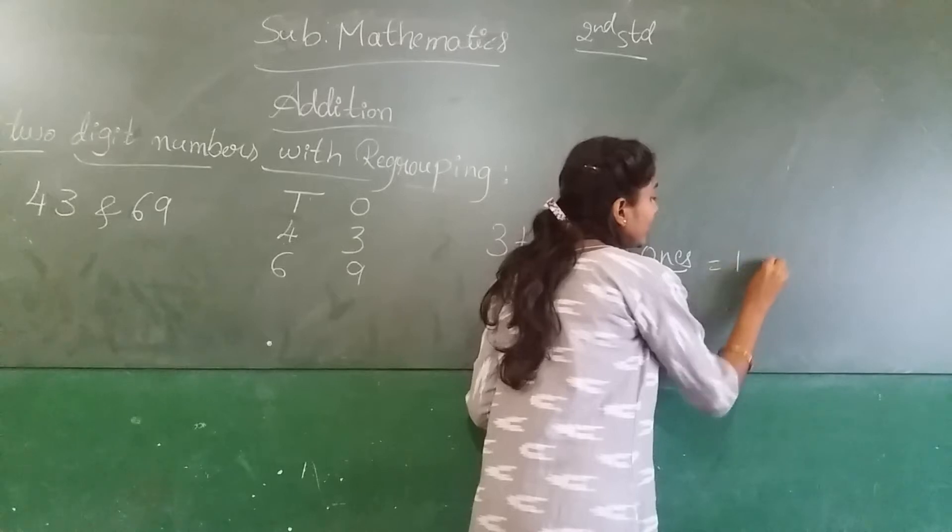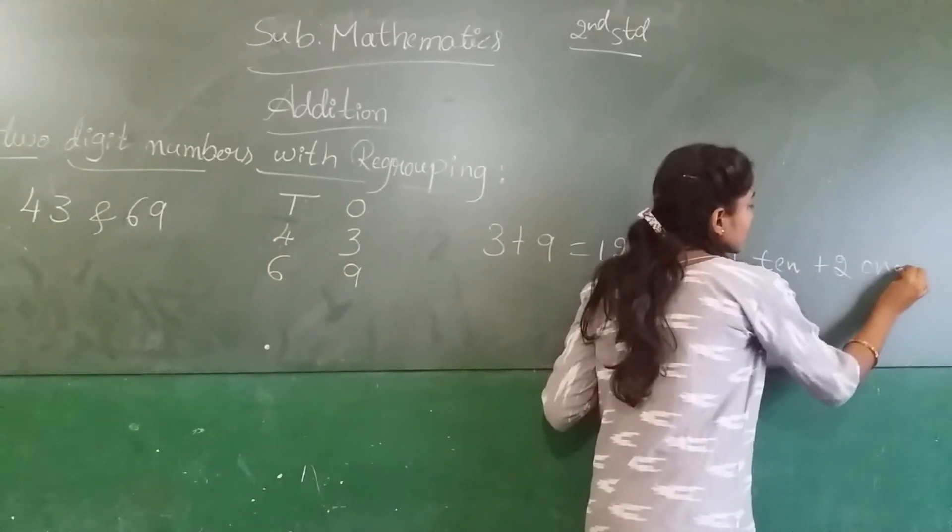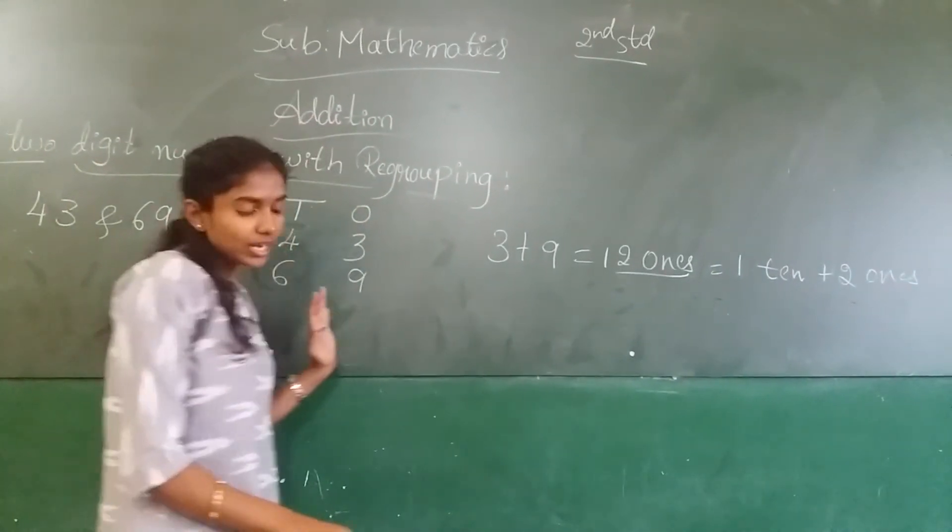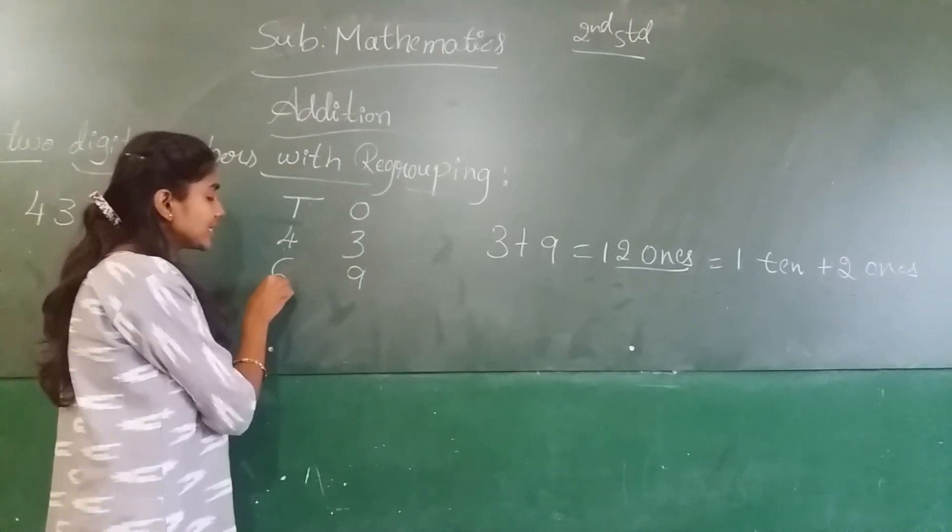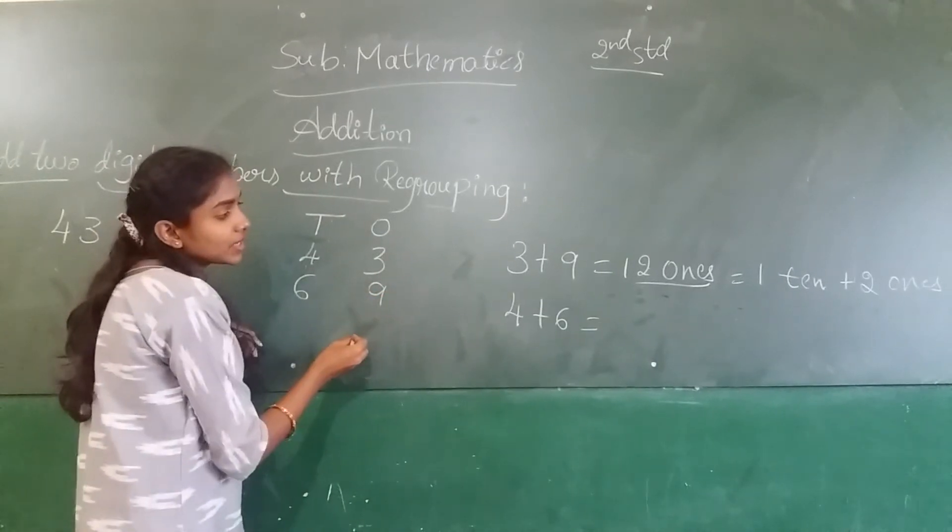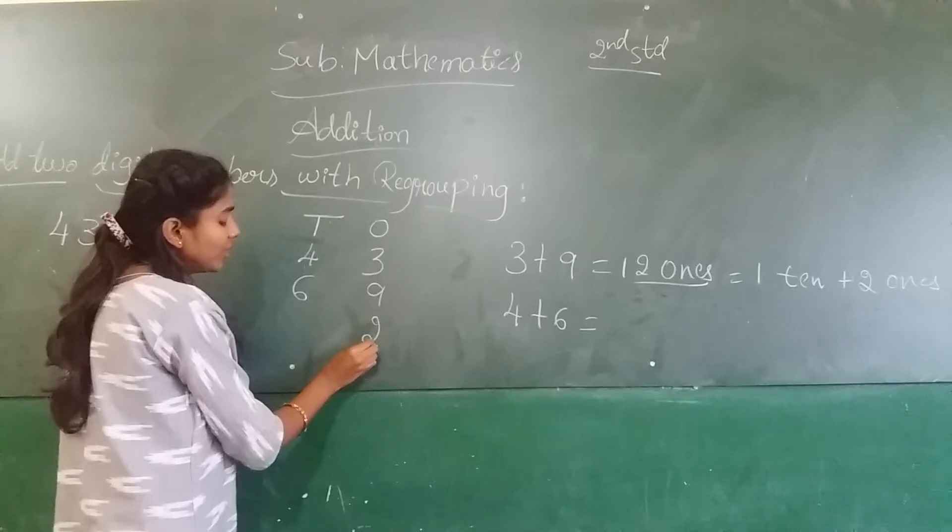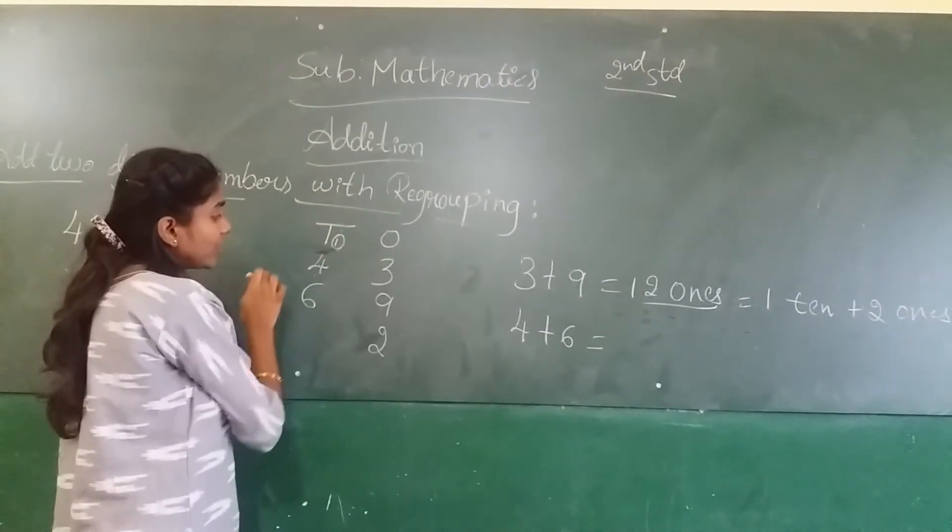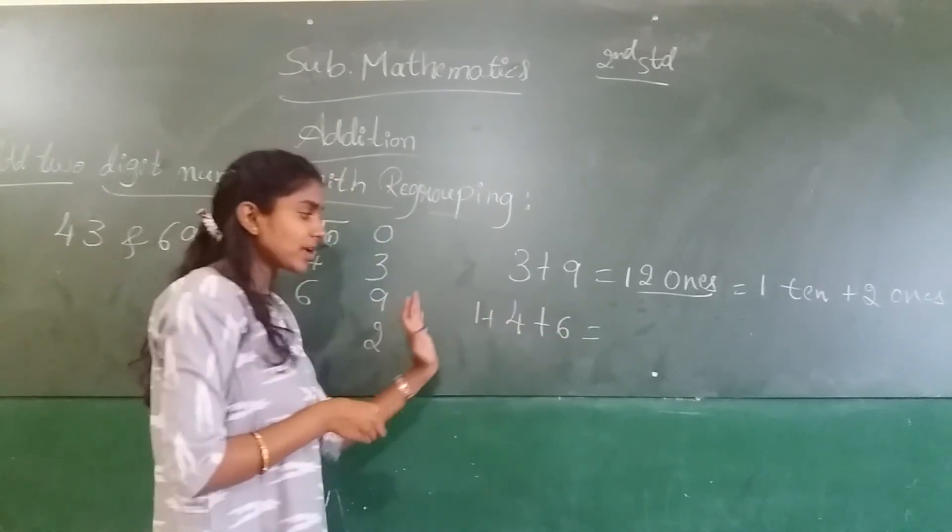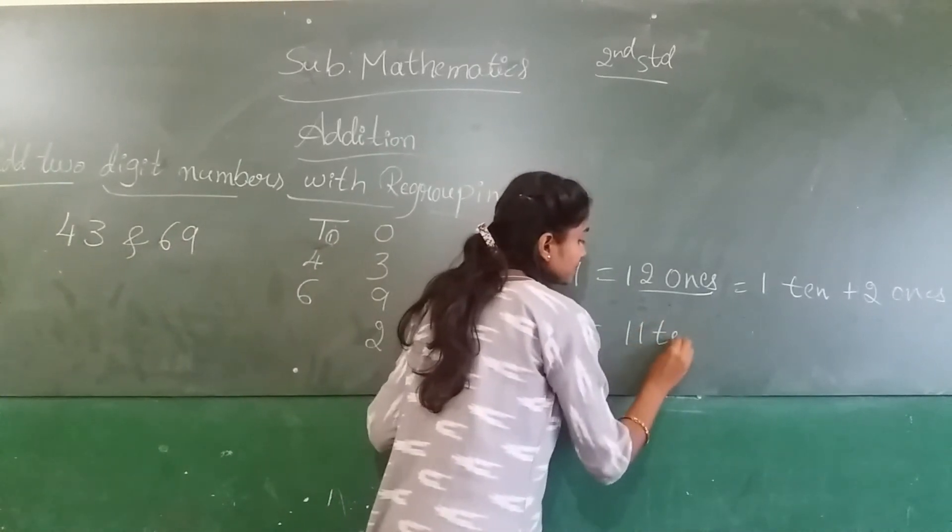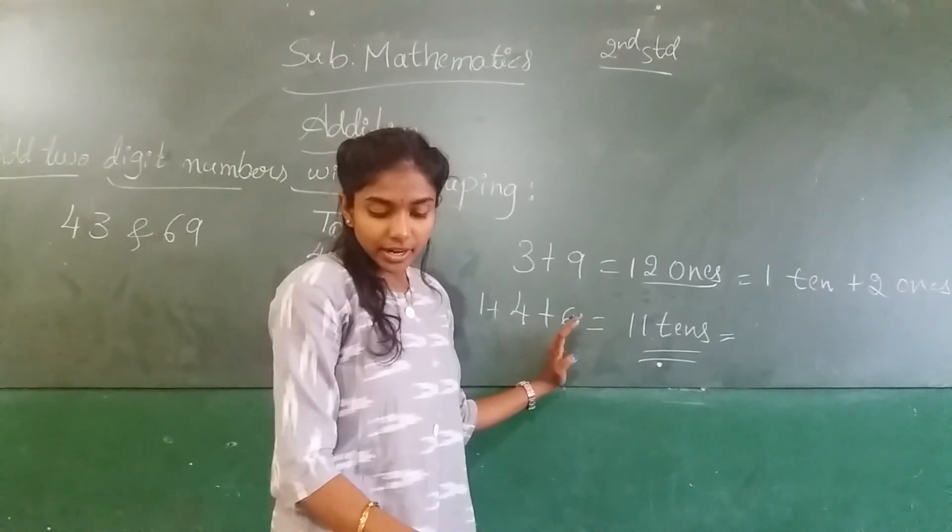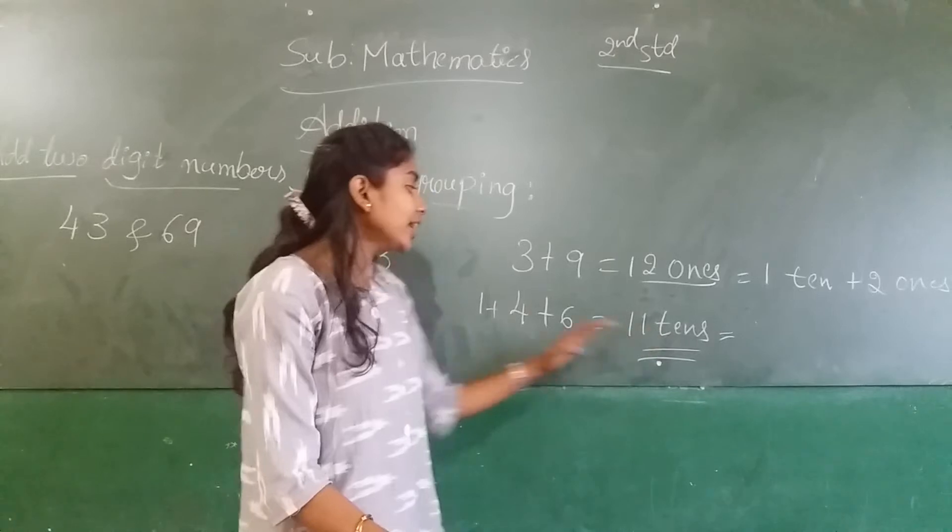Now, the number of regroups. We have 12 ones, which is 1 ten plus 2 ones. This is 100 plus 1, 10. This is 11, 10.